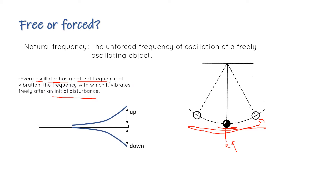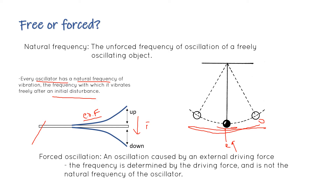An example of forced oscillation: take a ruler, press it and move it up and down - that is forced frequency. You are giving force repeatedly, and when you leave it, it starts oscillating naturally. This is forced oscillation - it is caused by an external driving force.